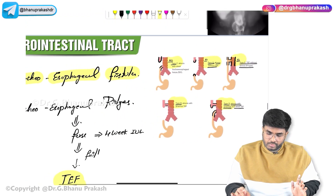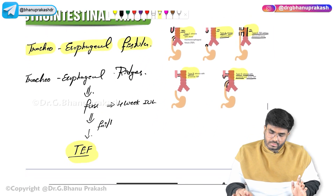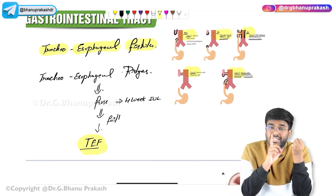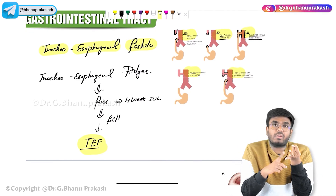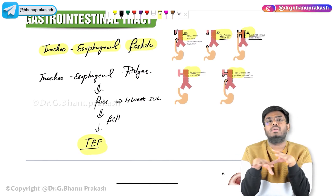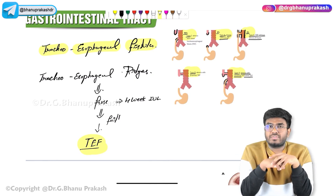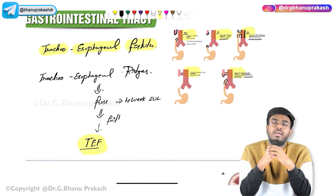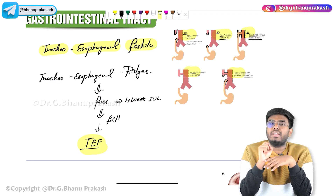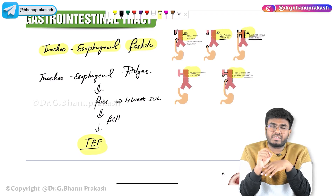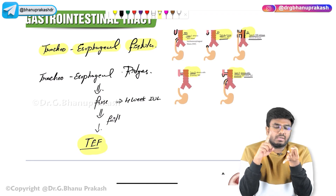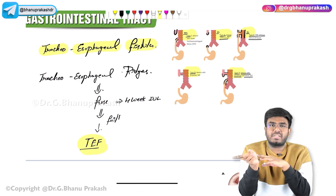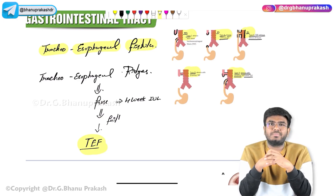Those are the key points for tracheoesophageal fistula — the cause, the types, and the important exam facts. The topic is now complete. In the next video, we will discuss esophageal diverticulum: different types including Zenker's diverticulum, traction diverticulum, and epiphrenic diverticulum. Hope the video was helpful. Thank you.